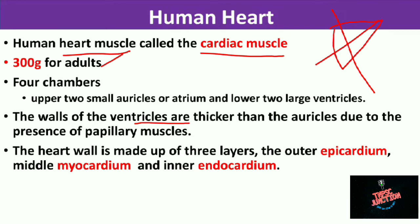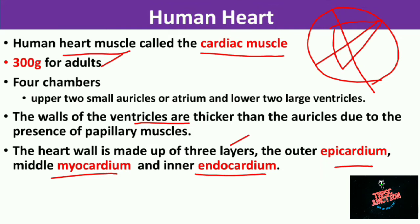If you look at the ventricles, the ventricle wall is quite thick — we will discuss the reason when we cover the functions. The heart is protected by a double-walled membrane overall, called the pericardium. This pericardium is a protection for the outer body. The heart has 3 layers: the outer layer is the epicardium, the middle layer is the myocardium, and the inner layer is the endocardium.